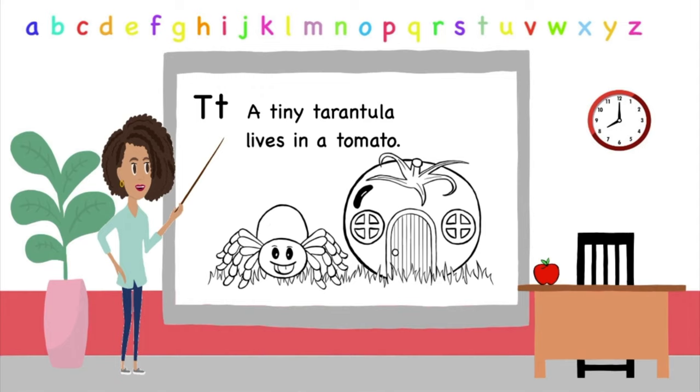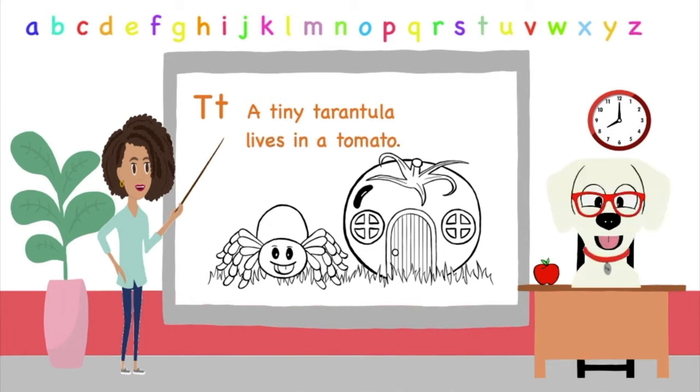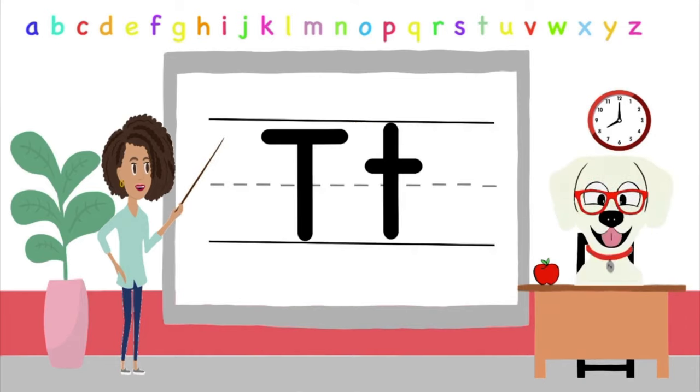Now let's read our sentence to see how many words we can find. A tiny tarantula lives in a tomato. Wow, I hear so many words here. Okay, let's read it again one more time and we can point out the sounds together. A tiny tarantula lives in a tomato. Great job, we have three words.